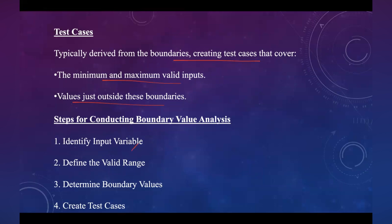There are a few steps for conducting boundary value analysis. First, identify the input variable — determine which inputs have defined ranges. Second, define the valid range — specify the acceptable limits for each input variable. Third, determine boundary values — identify the actual boundary values and the values immediately outside the limit. Fourth, create the test cases — develop test cases based on the identified boundary values.